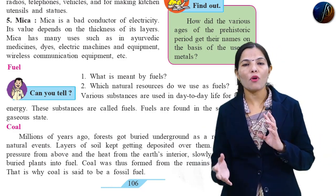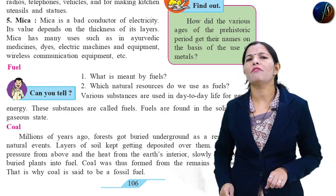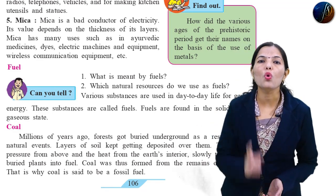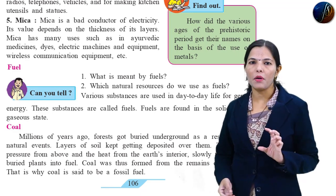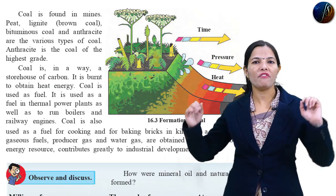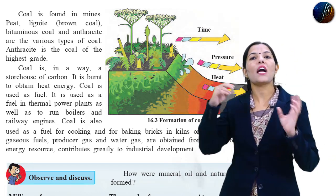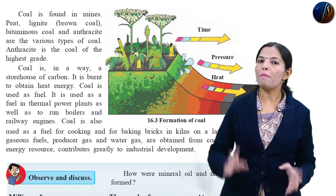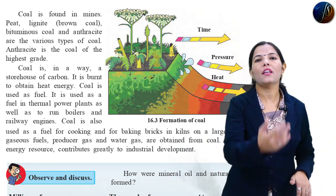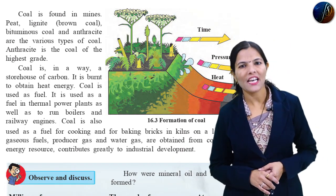Coal is formed by the transformation of dead plants — specific types of plants that got buried underground were transformed into coal. And crude oil — petrol, diesel, kerosene, paraffin wax — these are formed from the dead bodies of animals that got converted into crude oil. The dead bodies of plants buried underground were transformed into coal. This is the interesting story given in your textbook.